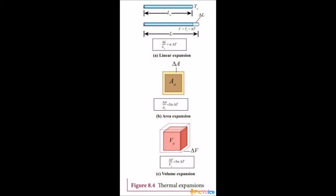Once again, students, we can recall the three types of expansion. The first one is linear expansion — increase in length of the body while heating. The second one is superficial or aerial expansion — increase in area of the solid object due to heating. The third one is cubical or volumetric expansion — increase in the volume of the solid object while heating. These are the three different types of expansion in solid objects.